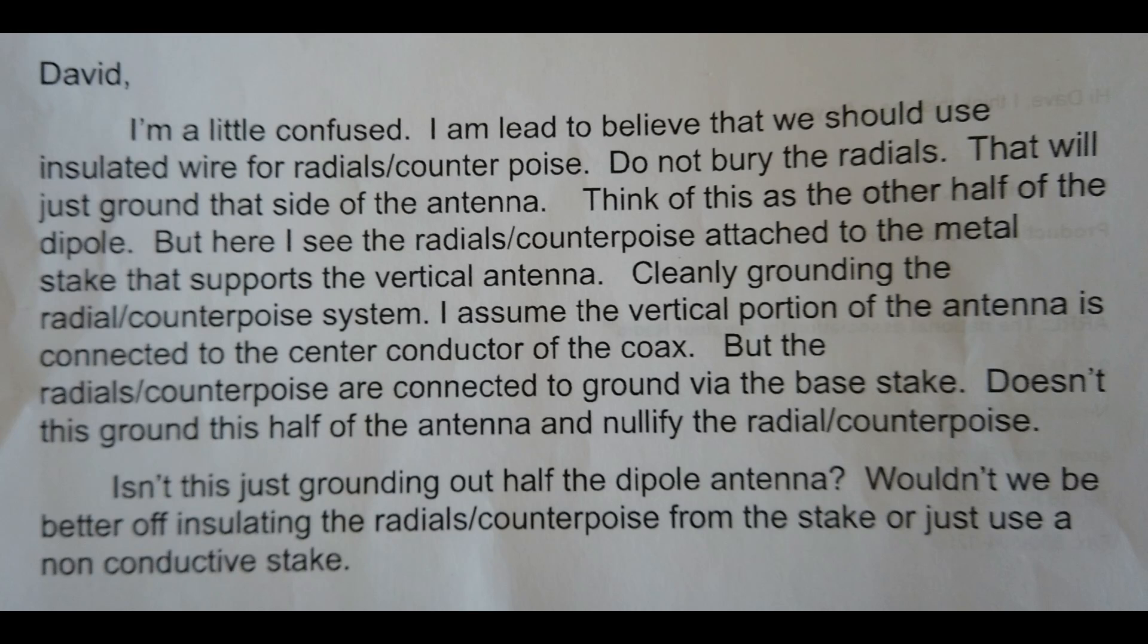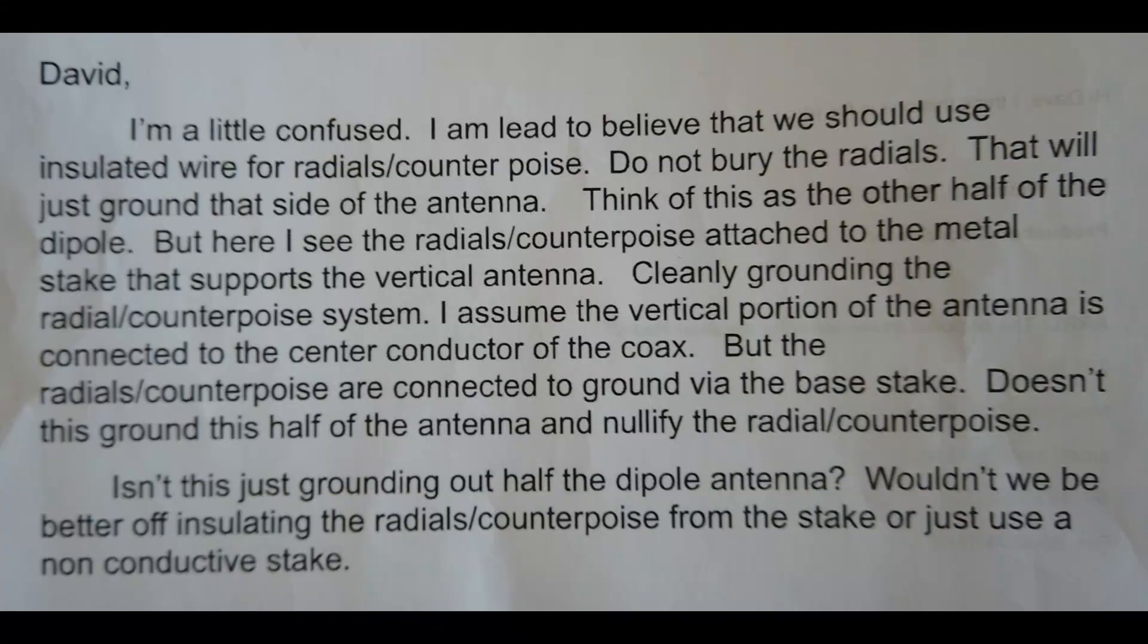But here I see the radials or counterpoise attached to the metal stake that supports the vertical antenna, cleanly grounding the radial counterpoise system. I assume the vertical portion of the antenna is connected to the center conductor of the coax. Yes. But the radials counterpoise are connected to ground via the base stake. Doesn't this ground this half of the antenna and nullify the radial counterpoise? Isn't this just grounding out the other half of the dipole? Wouldn't we be better off insulating everything?